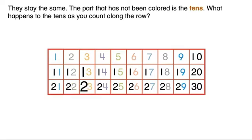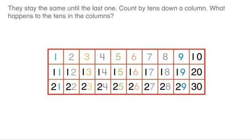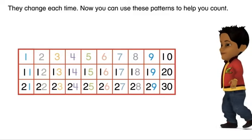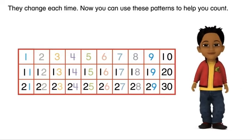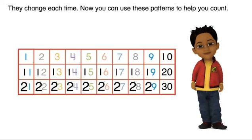What happens to the tens as you count along the row? They stay the same until the last one. Count by tens down a column. What happens to the tens in the columns? They change each time.